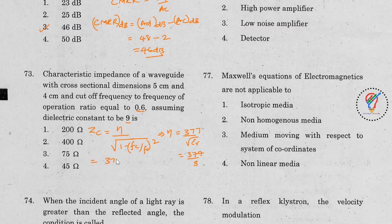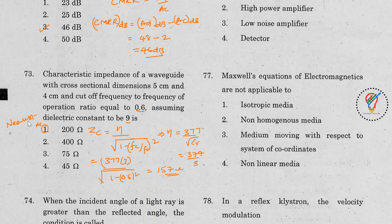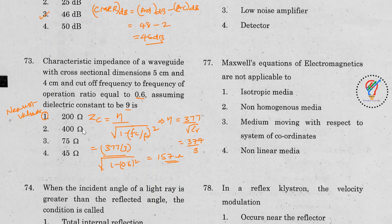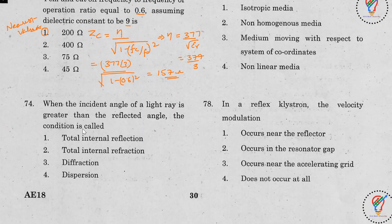ZC = (377/3) divided by the square root of (1 − 0.6²). Solving this gives approximately 157 ohms, but the nearest option is 200 ohms.